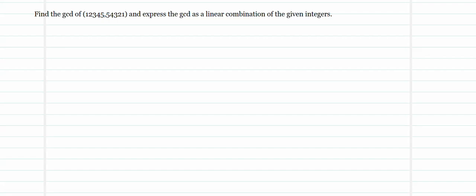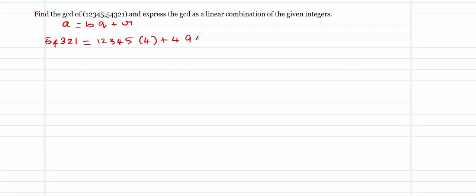The division algorithm is A = BQ + R. 12345 divided into 54321 goes 4 times and leaves a remainder of 4941. So our first equation is 54321 = 12345×4 + 4941.